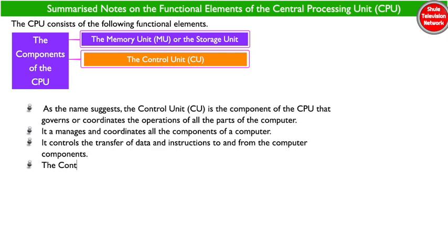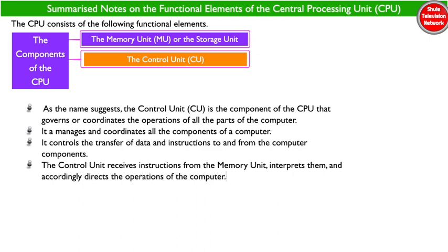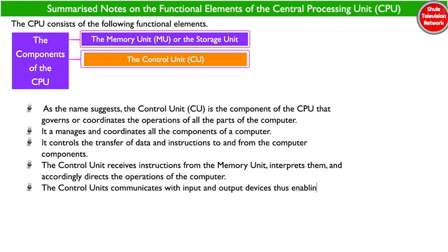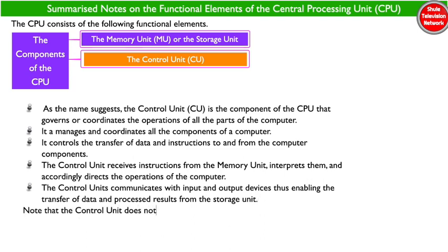The control unit receives instructions from the memory unit, interprets them, and accordingly directs the operations of the computer. The control unit communicates with input and output devices, thus enabling the transfer of data and processed results from the storage unit. Note that the control unit does not process or store data.